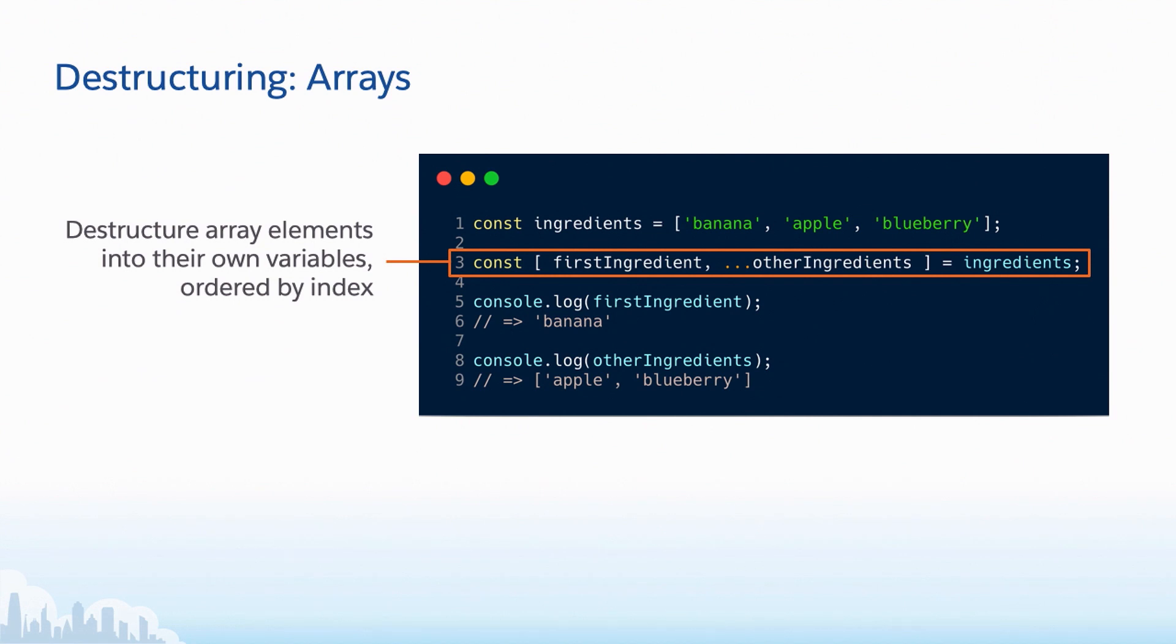And destructuring arrays, so remember when we were destructuring objects before, we have to match things by the key name. When we're destructuring arrays, we're actually destructuring by the order that they appear in the array, since order is reliable in arrays, right? So on line three, when we are destructuring from an array, again, we have the square brackets. And we have first ingredient. That's actually going to correspond to banana, because it's the zeroth or the first thing in our array. And then again, just to drive this point home about rest operators, if we then do a rest operator with our other ingredients, just like we did in an object, it's just going to collect the rest of those things, put them into an array, and now we have an array that we can use that just has apple and blueberry in it.